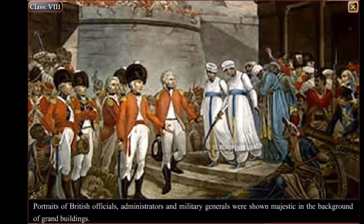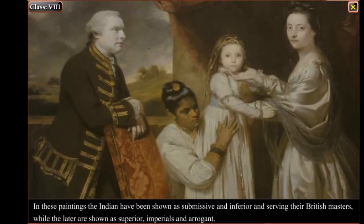Portraits of British officials, administrators and military generals were shown majestic in the background of grand buildings. In these paintings, the Indians have been shown as submissive and inferior and serving their British masters, while the latter are shown as superior, imperial and arrogant.